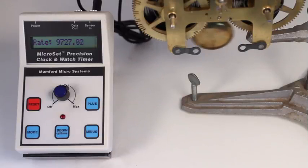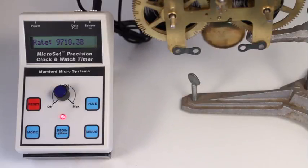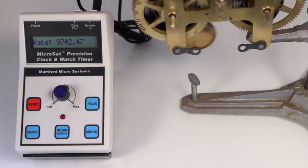This greatly reduces false triggering when using an acoustic sensor on noisy clocks and watches. It can also prevent a false reading if you drop a screwdriver on the table or the sensor cable gets bumped.